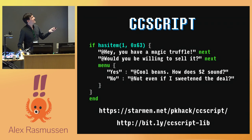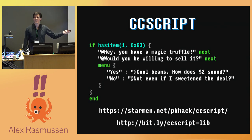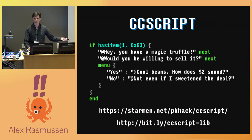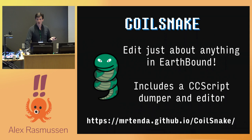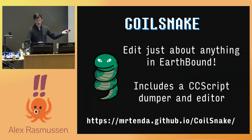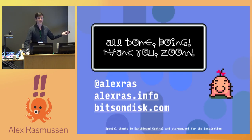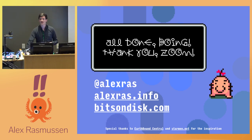People have also made tools to make this more accessible. There's a language called CCScript that compiles into this instruction set, and people have built a whole library of scriptlets you can drop into your game. There's also a tool called Coilsnake that lets you edit just about everything in EarthBound — from sprites to maps — and it includes a CCScript dumper and editor. And with that, thank you very much for listening. If you want to get in touch, here's my contact information — I'd love to talk about this stuff more.